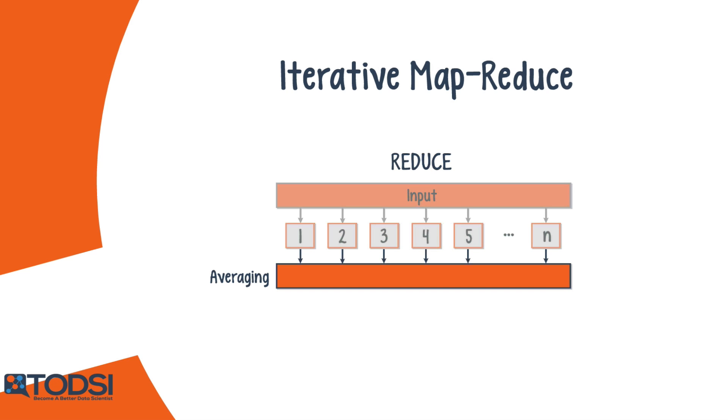In the Reduce step, the weights and biases across every node in the cluster are averaged together. Each node replaces the parameters of its net with this new average. These two steps are repeated iteratively until the overall error is sufficiently small. This is how DL4J trains a model on a distributed platform.